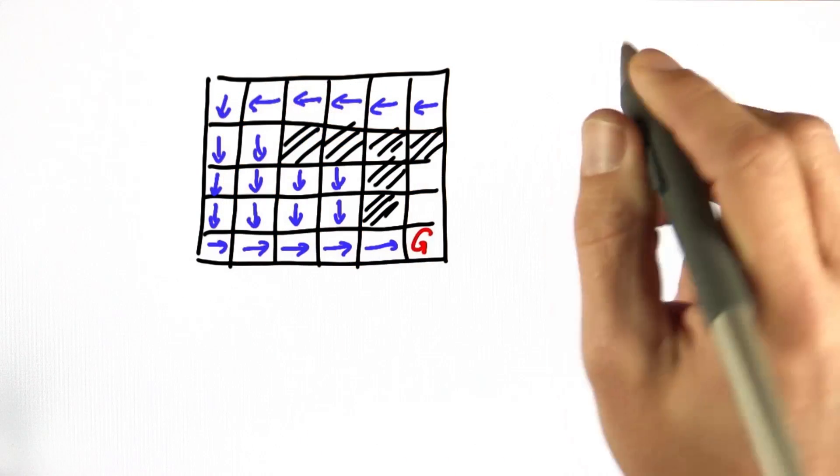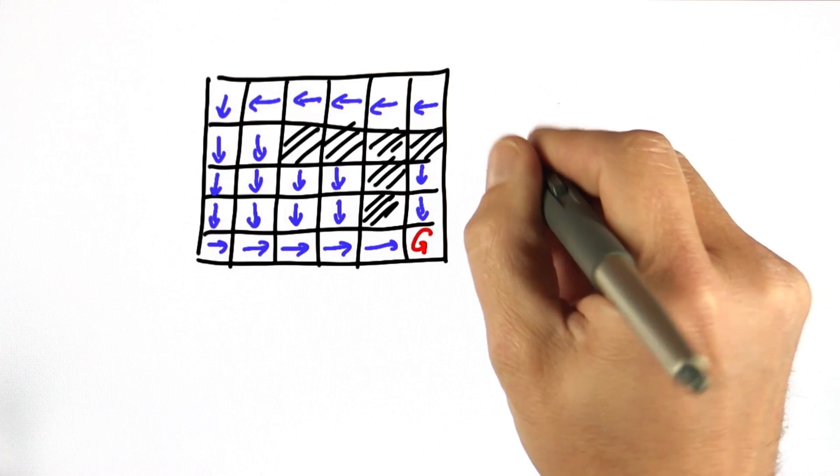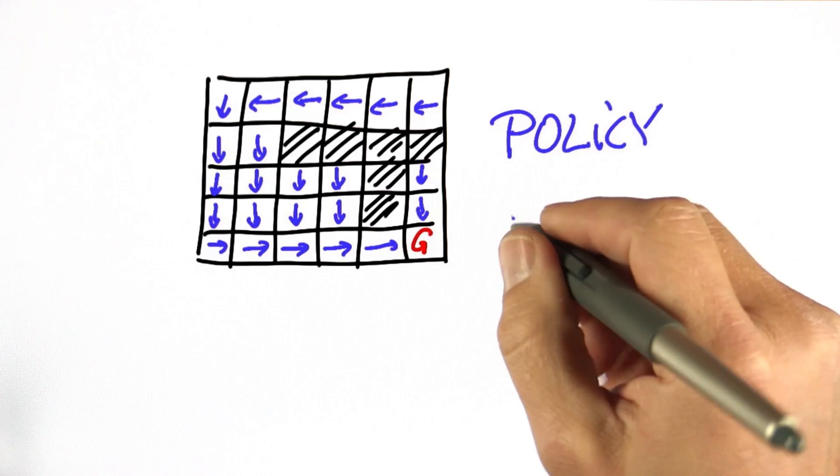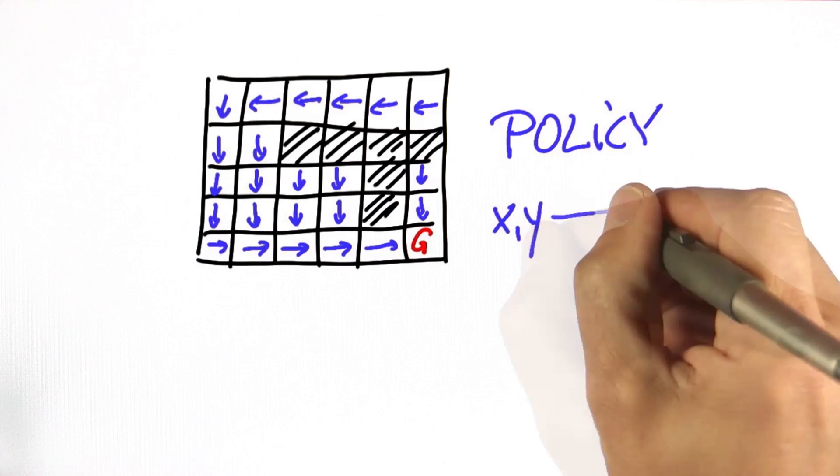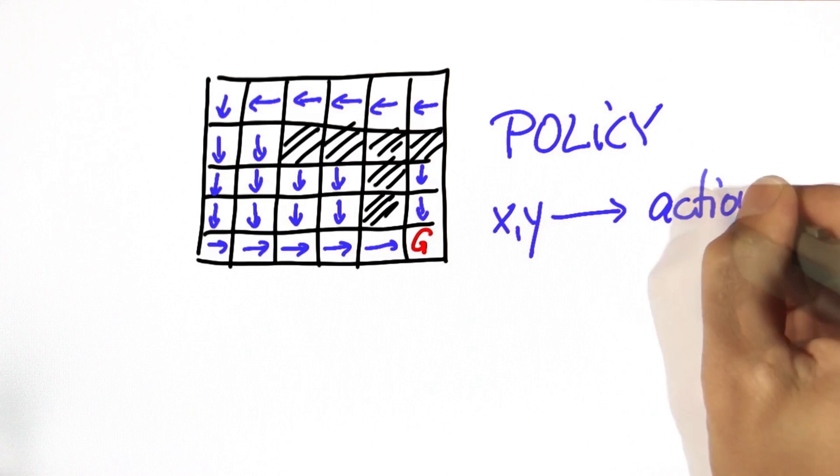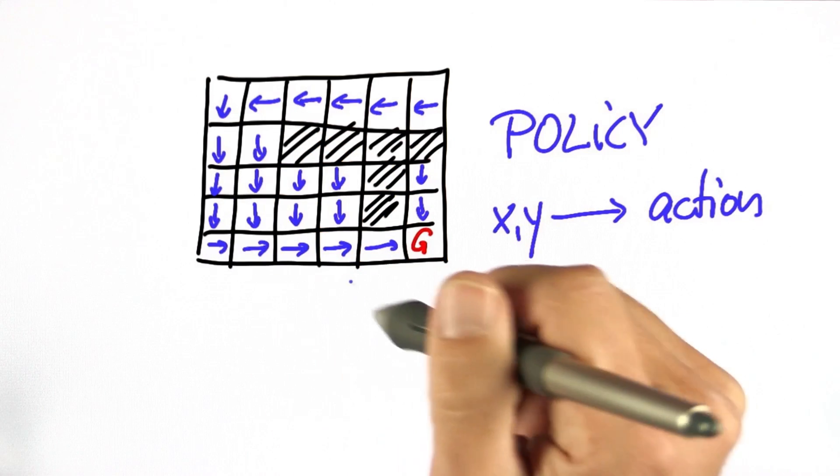Then dynamic programming gives you an optimal action to do at every single grid cell. Each grid cell now has a label. That label is often called policy. Policy is a function that maps the grid cell into an action. The action in this case is move left, move down, move right, or move up.